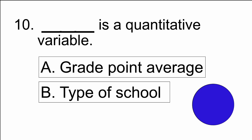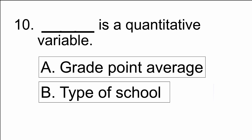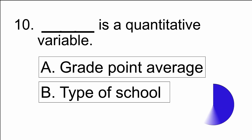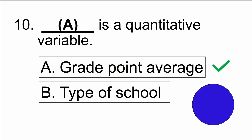Number ten: blank is a quantitative variable — A) grade point average, or B) type of school. The answer is A) grade point average.